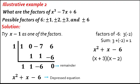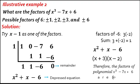Therefore, the factors of x cubed minus 7x plus 6 are quantity x minus 1 times quantity x plus 3 times quantity x minus 2. The degree of the polynomial is 3 and the number of factors is also 3.